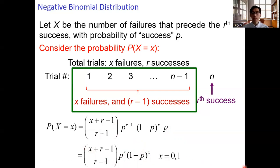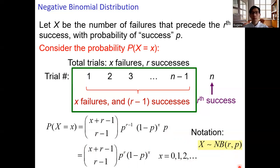x takes on values 0, 1, 2, up to infinity — this is the number of failures required to get r successes. The notation for the negative binomial distribution is NB with two parameters: r and p. r stands for the total number of successes we want to achieve, and p is the probability of success.